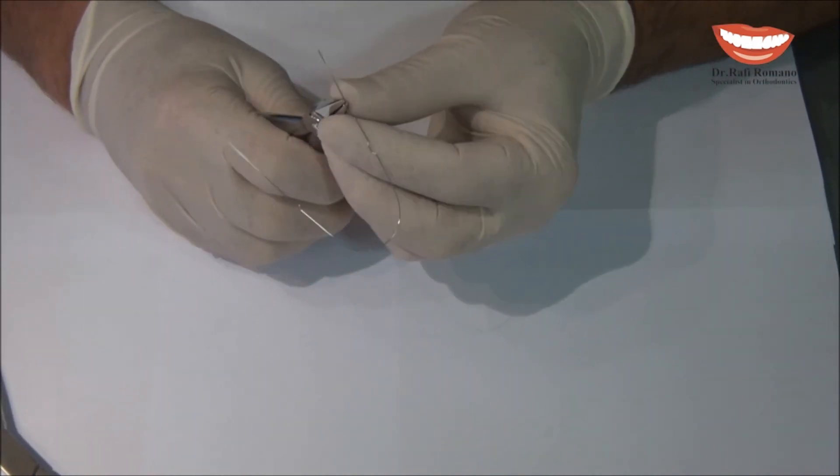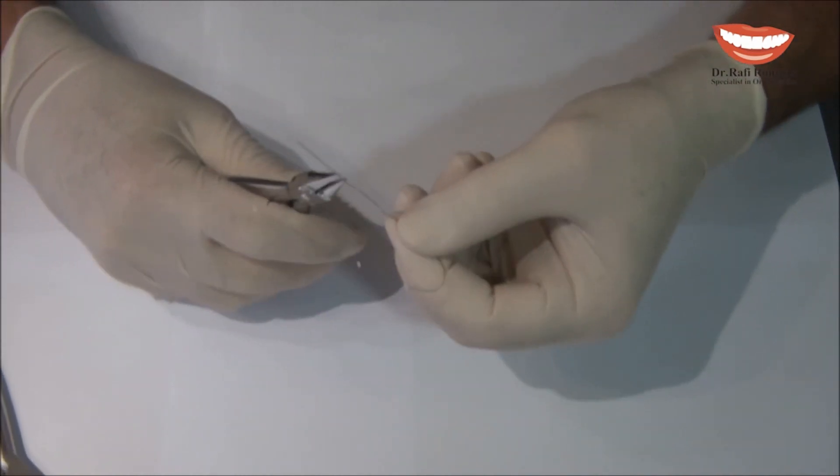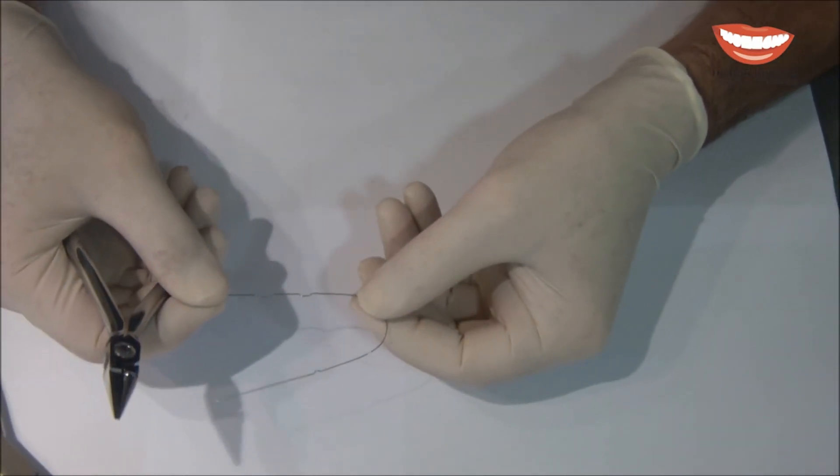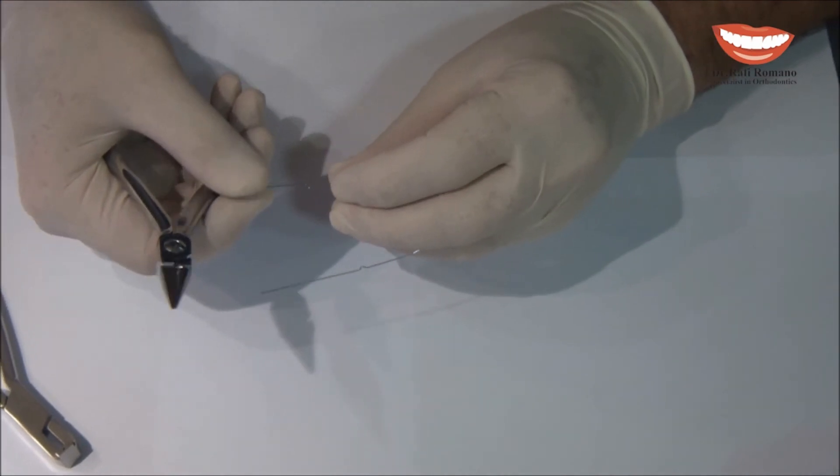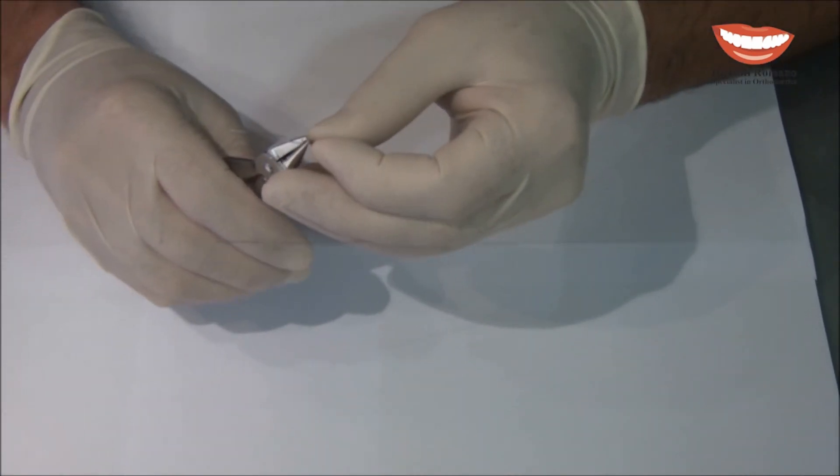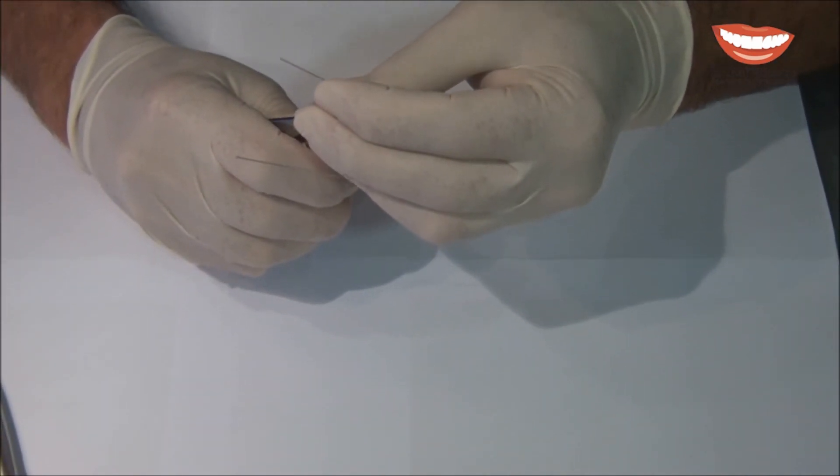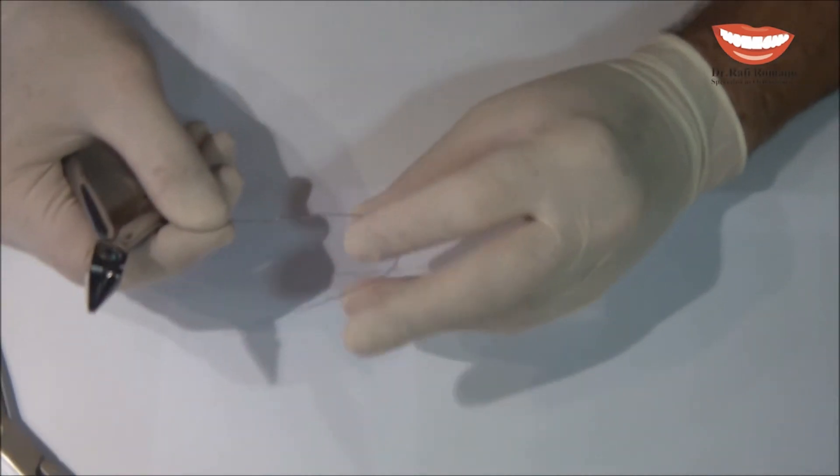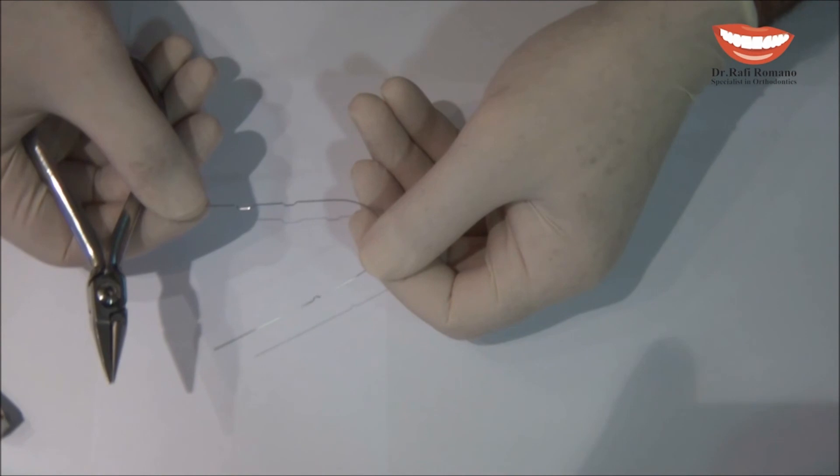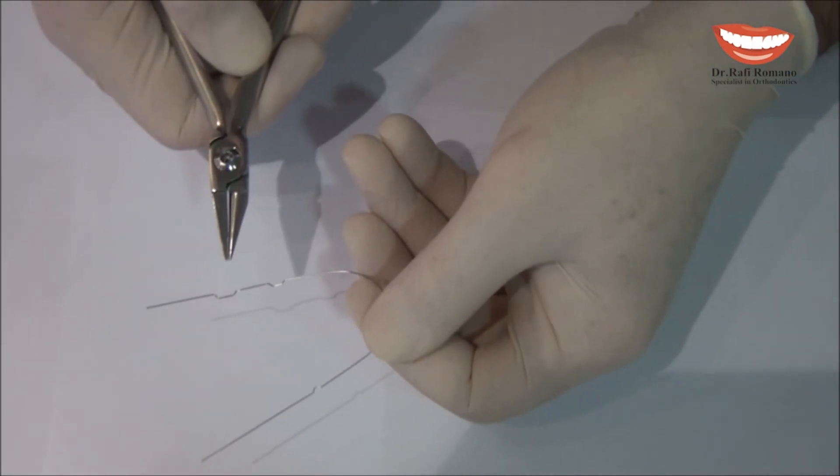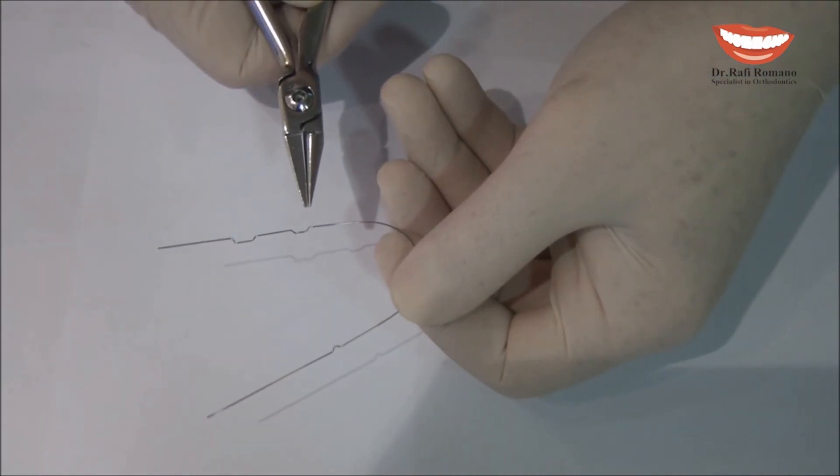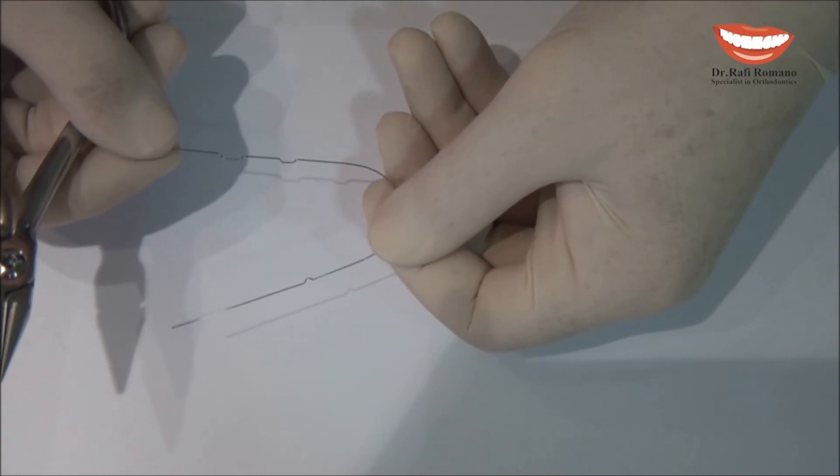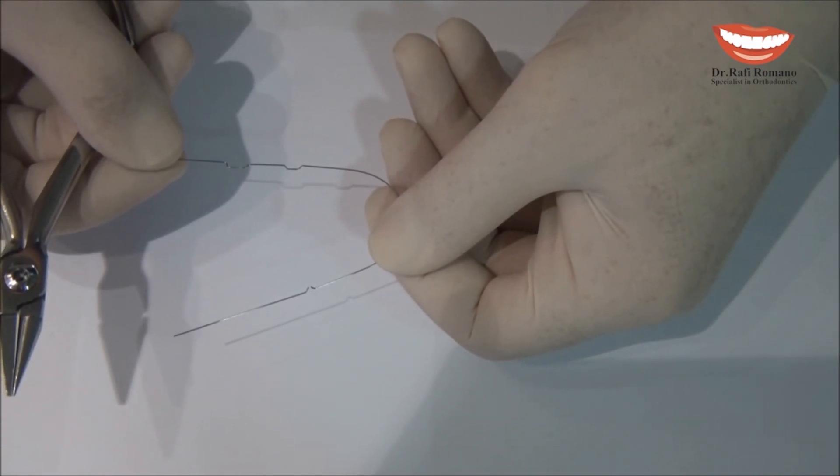Now, this is of course a little more time consuming, but you can compare these two bends—the one made by the special plier and the one made by the light wire plier. Besides the fact that I made this one a little bigger than this one, they look almost the same. Step in and step out.